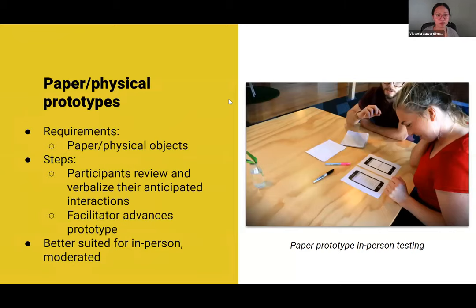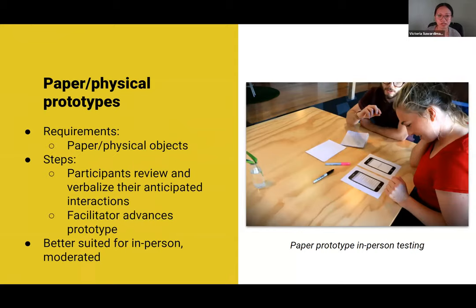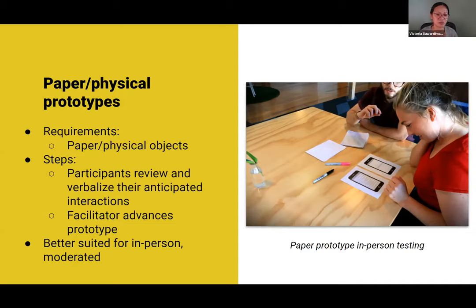We're covering all the different ways you can prototype and how you might test them. One approach is paper prototypes — things on physical objects. It requires those physical objects, and you're having the participant review and verbalize their anticipated interactions. Remember that usability testing is task-based: you say, 'From here, what would you do next?' and see where they would click or go. It's up to the facilitator to advance the prototype by shuffling through screens. Because of that, it's much better suited for in-person, moderated usability testing.